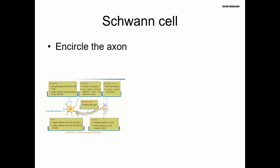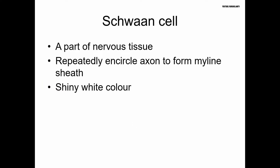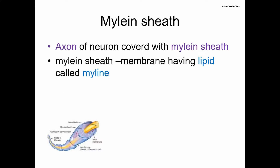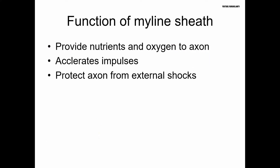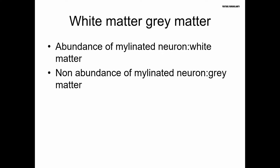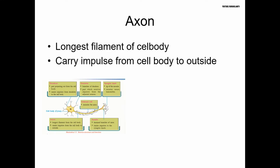The myelin sheath is made of lipids and surrounds the axon. It helps conduct the impulse, message, and electrical signals. Myelinated neurons appear white, while unmyelinated neurons appear gray. This structure is the axon.